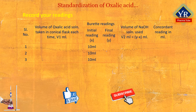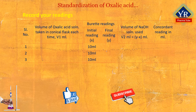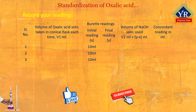Record your readings as in the table. The experiment has to be done in triplicate, therefore the serial numbers 1, 2 and 3. In the second column, the volume of the oxalic acid solution taken in the conical flask has to be written each time in milliliters. In the third column, the burette initial and final readings have to be mentioned. In the fourth column, the volume of the sodium hydroxide solution consumed or used to complete the reaction is to be written. This can be calculated by subtracting x from y, that is the final burette reading minus initial burette reading. In the last column, the concordant or consistent reading in milliliters has to be written.